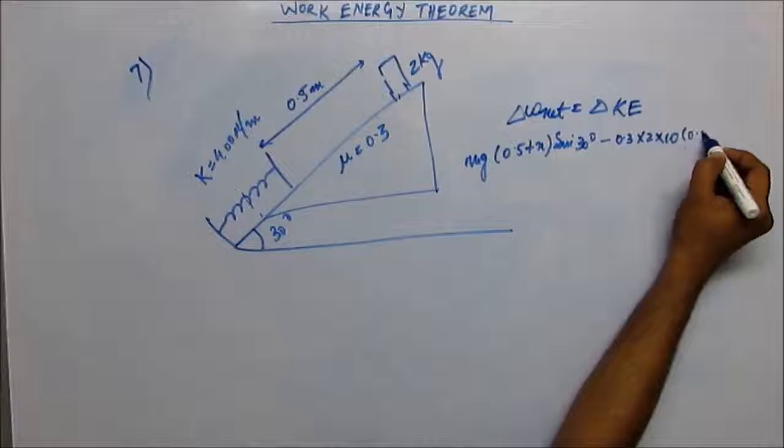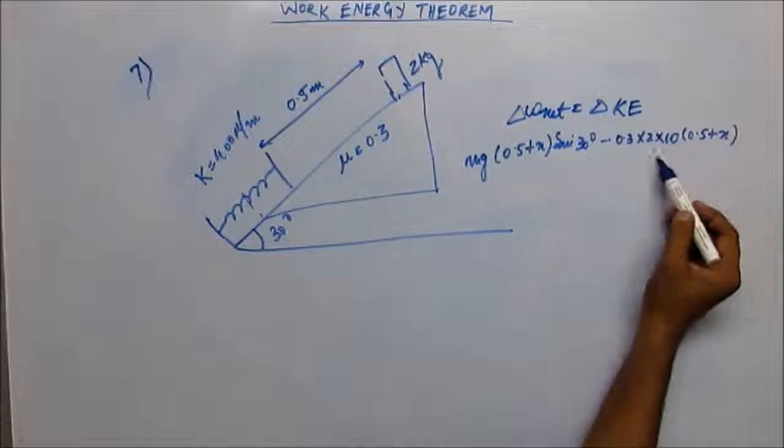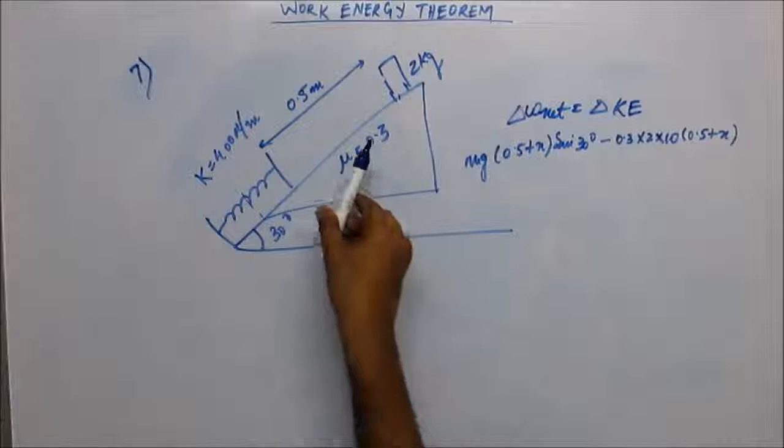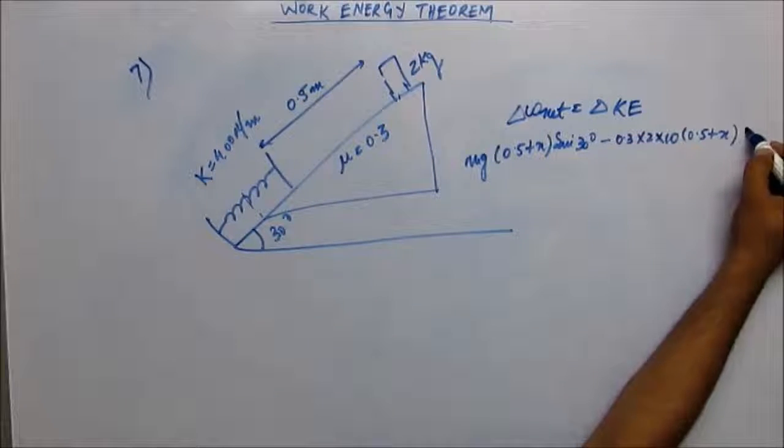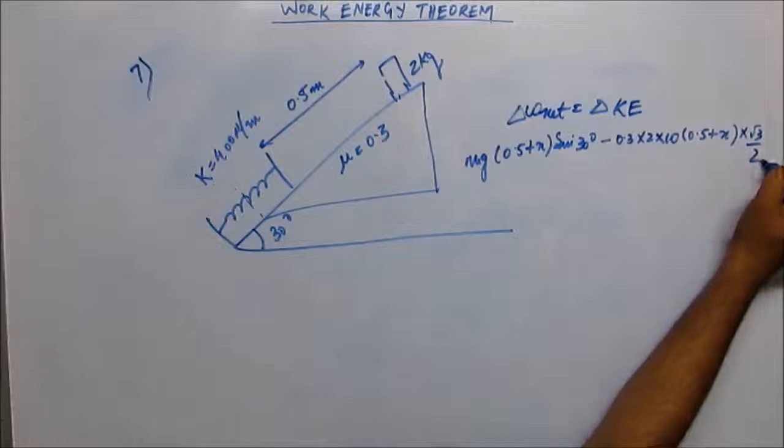Times (0.5 + x). But the normal reaction is not mg - normal reaction would be mg cos theta, that is mg cos theta, which is √3/2.